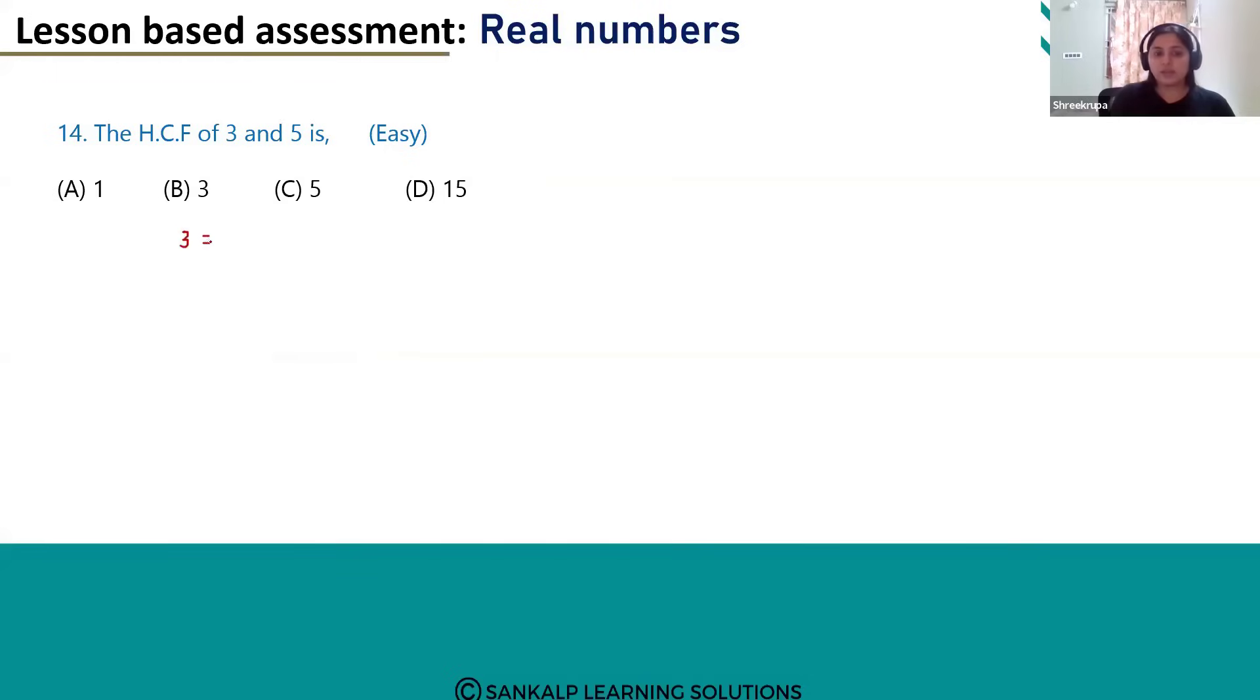So we can get the factors as 1 and 3. For 5, it's 1 and 5. So you can see only 1 is common in both the numbers. Right? These are prime numbers, so they will have 1 and the number itself as the factors.